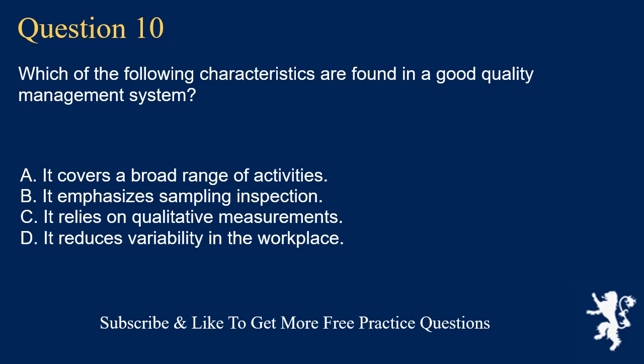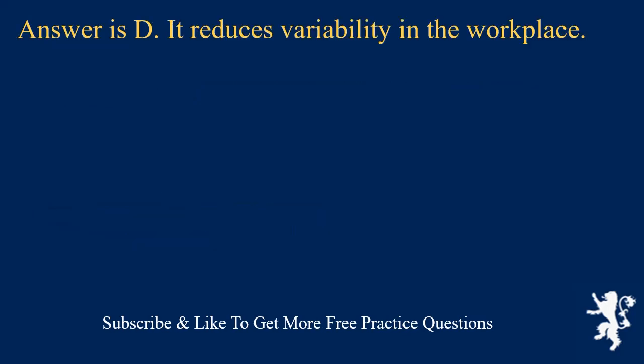Question 10. Which of the following characteristics are found in a good quality management system? A. It covers a broad range of activities. B. It emphasizes sampling inspection. C. It relies on qualitative measurements. D. It reduces variability in the workplace. Answer is D. It reduces variability in the workplace.